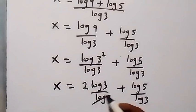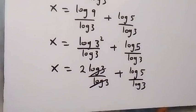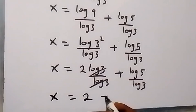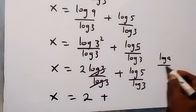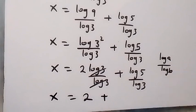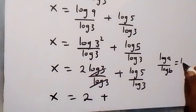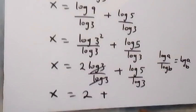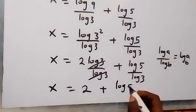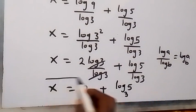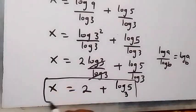The log 3 over log 3 cancels to 1, giving us 2. For the remaining term, log 5 over log 3, we apply the change of base formula — log a over log b equals log base b of a — so this becomes log base 3 of 5. Therefore x equals 2 plus log base 3 of 5.